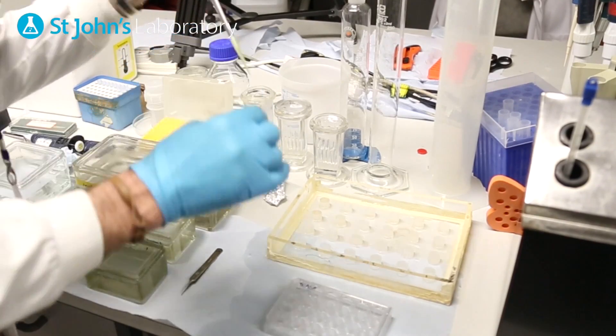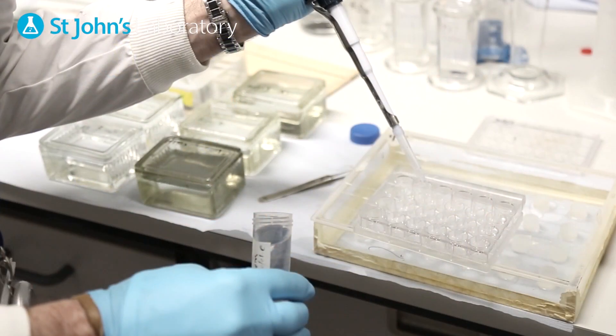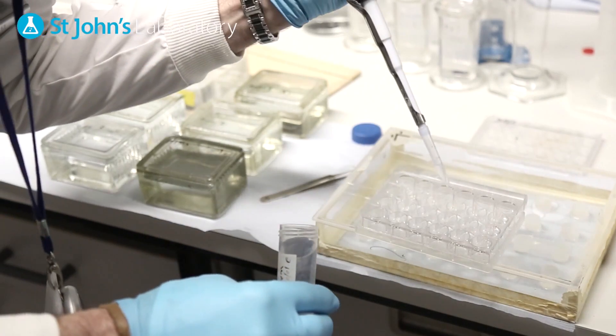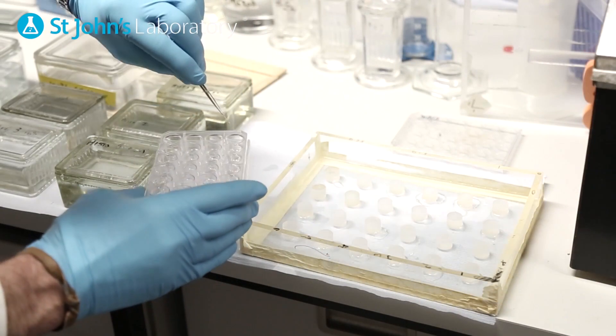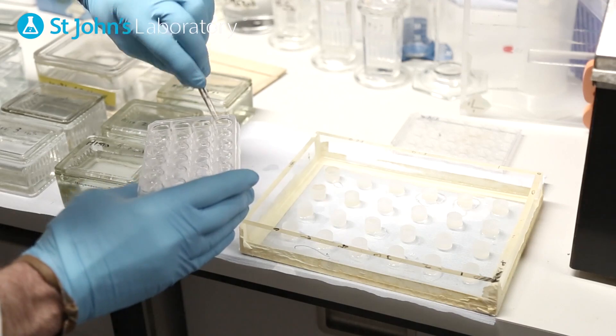Following blocking return the slides to the wells and clean the humidifier unit. Apply the primary antibody and incubate at room temperature for 1 hour. Wash with PBS 3 times to remove any primary remnant.